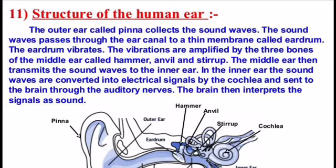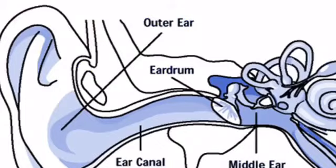There are three major parts of the human ear: the outer ear, the middle ear, and the inner ear. The outer part of the ear is called the pinna. The pinna collects sound from the surroundings and directs it to the ear drum. The ear drum is a thin, rubber-like sheet. As sound waves reach the ear drum, they are forwarded to the middle ear, which converts the sound waves into vibrations. The ear drum moves inward and outward to create these vibrations.